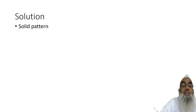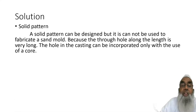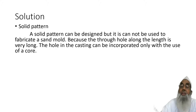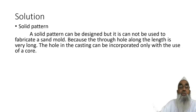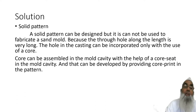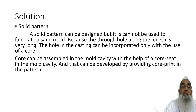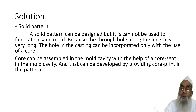First of all, we need to design a solid pattern. However, a solid pattern cannot be used to fabricate a sample because the through hole along the length is really long. Therefore, the hole in the casting can be incorporated only with the use of a core. The core can be assembled in the mold cavity with the help of a core seat, which can be developed in the cavity by providing the core print in the pattern.